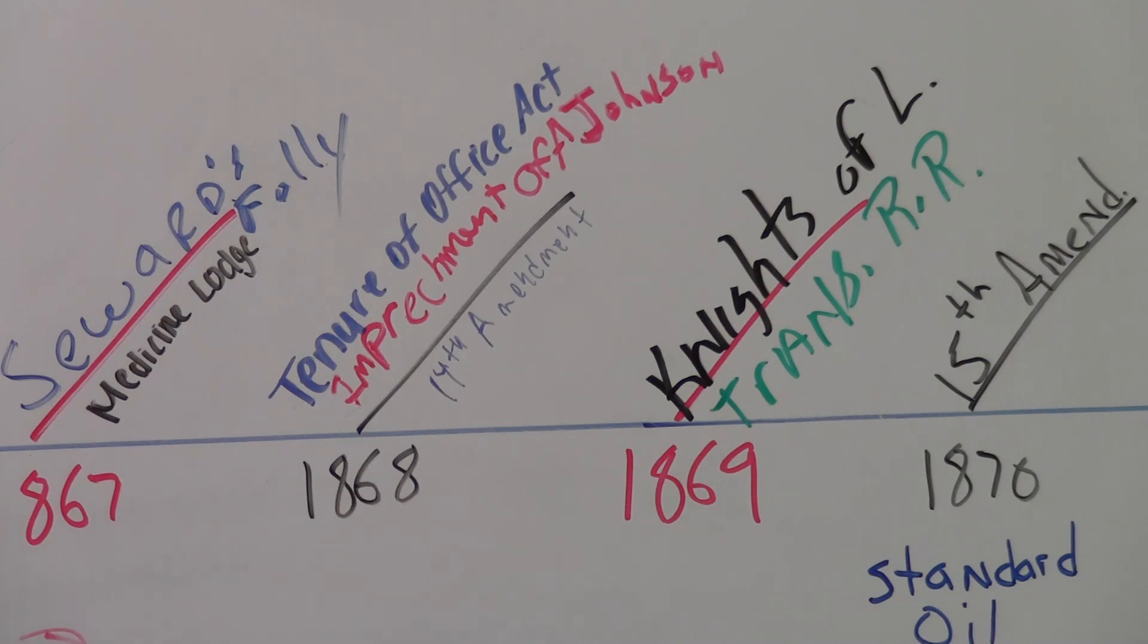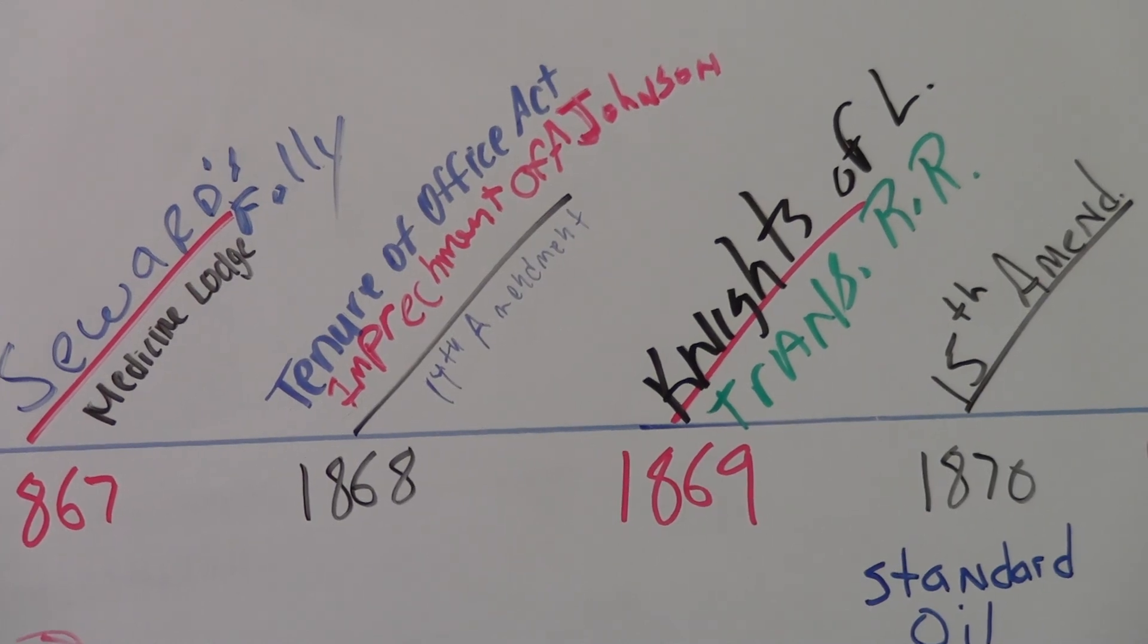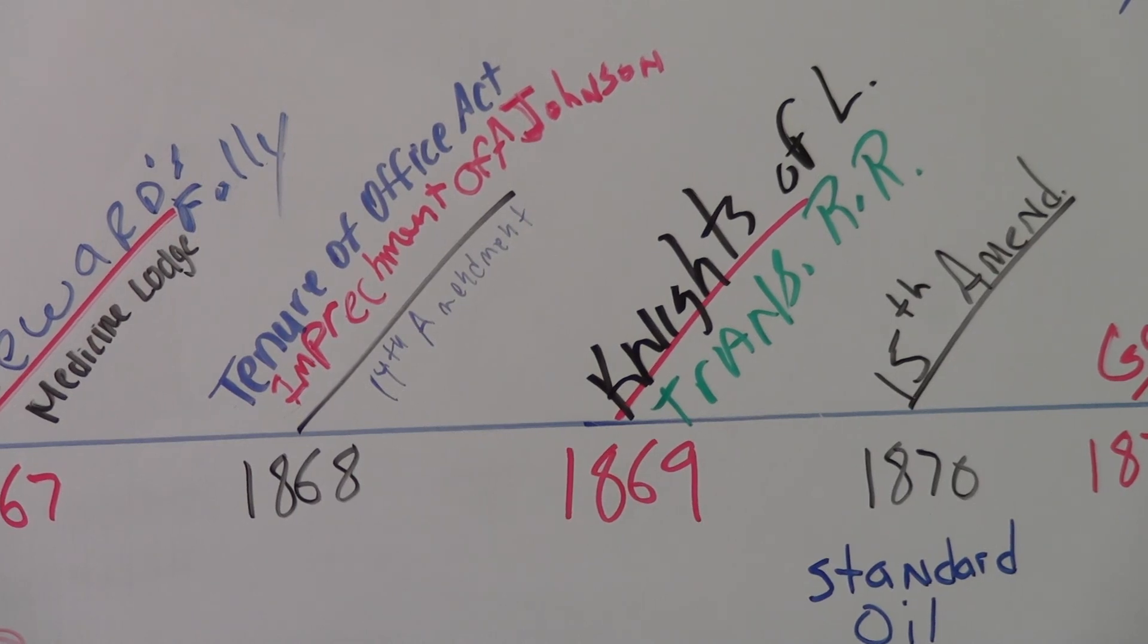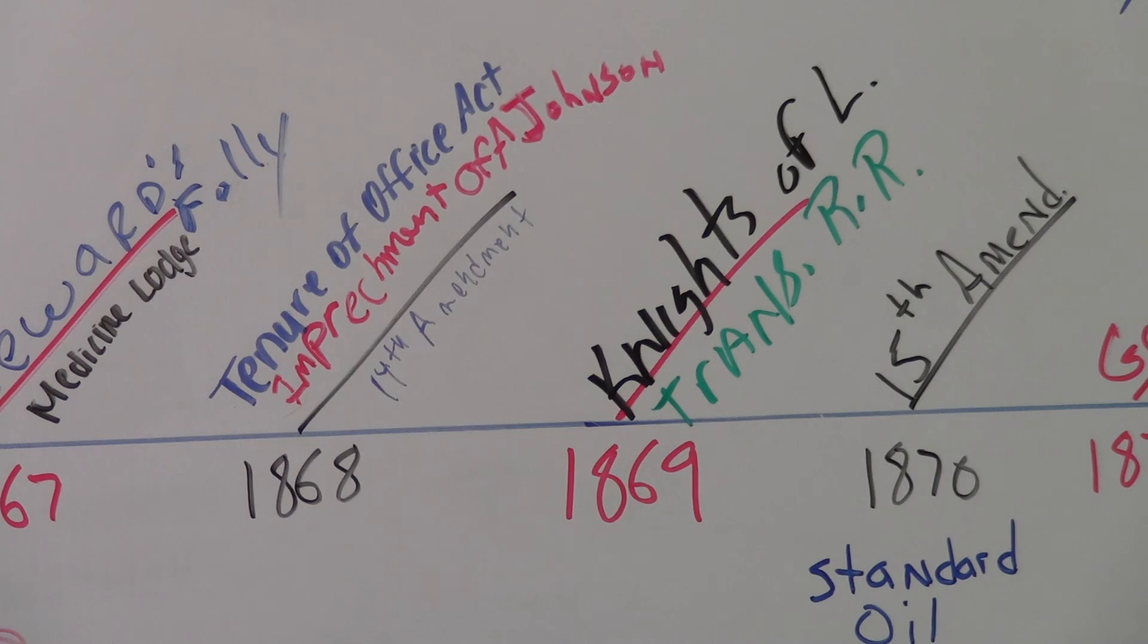Also in 1868, the 14th Amendment will be passed. The 14th Amendment, also called the Equal Protection Amendment, will allow blacks to be considered citizens of the United States and allow former slaves certainly to be citizens of the United States as well. And in time, that will be eroded as a result of the slaughterhouse cases, which will occur sometime later in the mid-1870s.